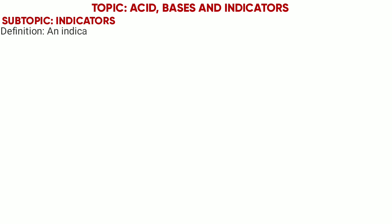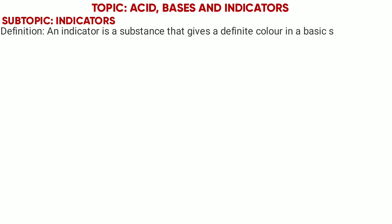An indicator is defined as a substance that gives a definite color in a basic solution and a different definite color in an acidic solution.